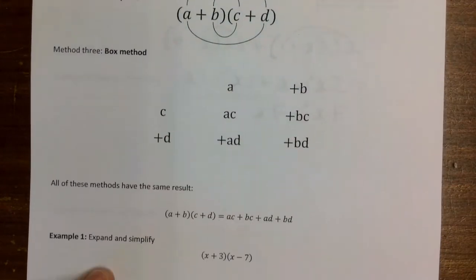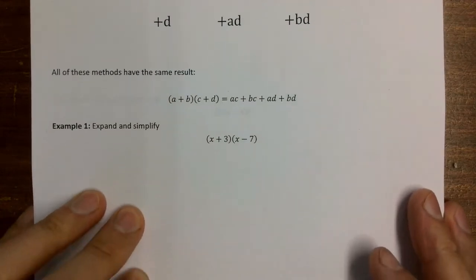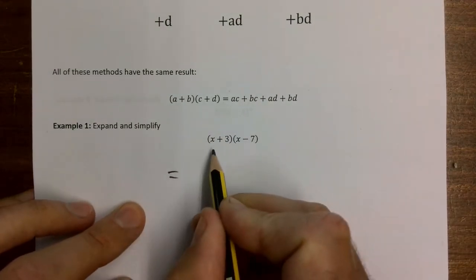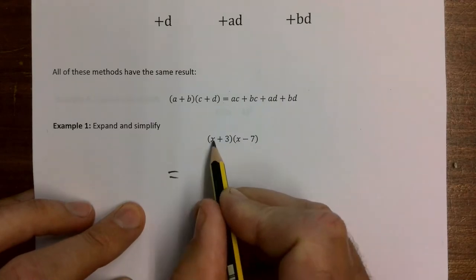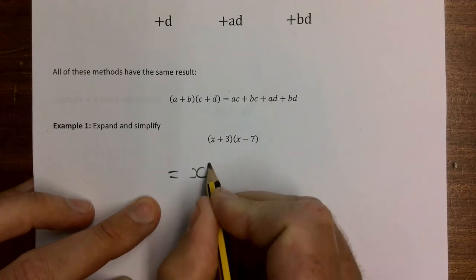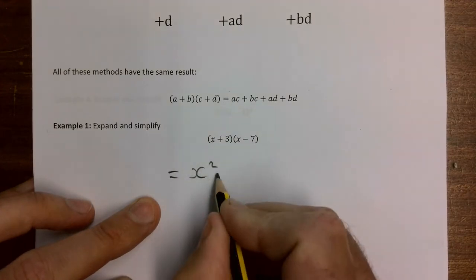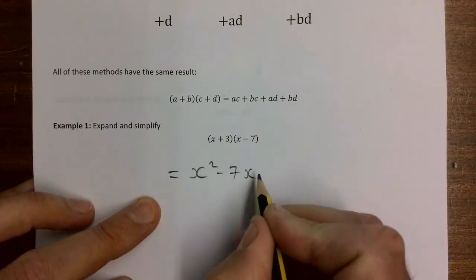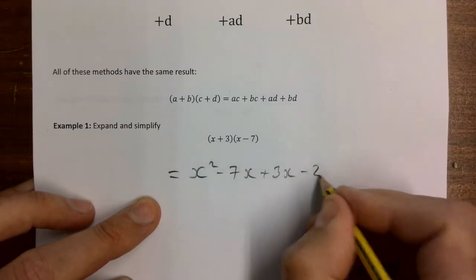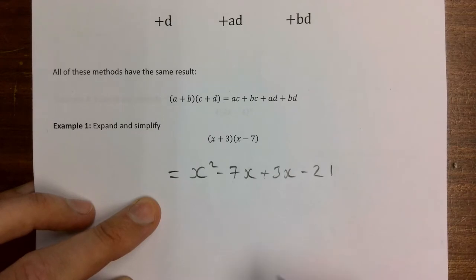Most people are reasonably competent at doing this already, so let's take this one nice and slowly. F for first - the two first terms, that's x times x, which gives me x squared. Outer is minus 7x, inner is plus 3x, and last is minus 21.